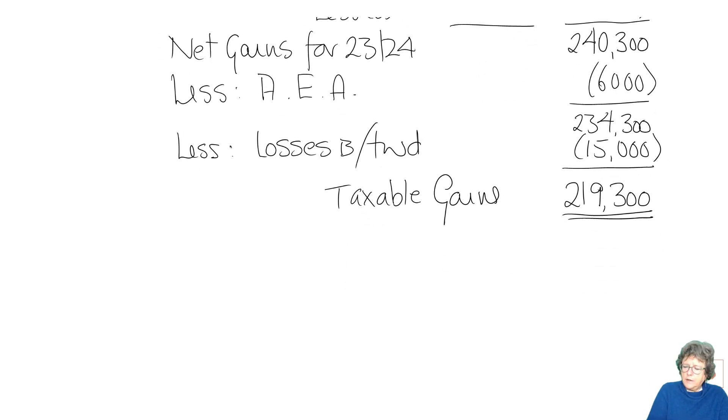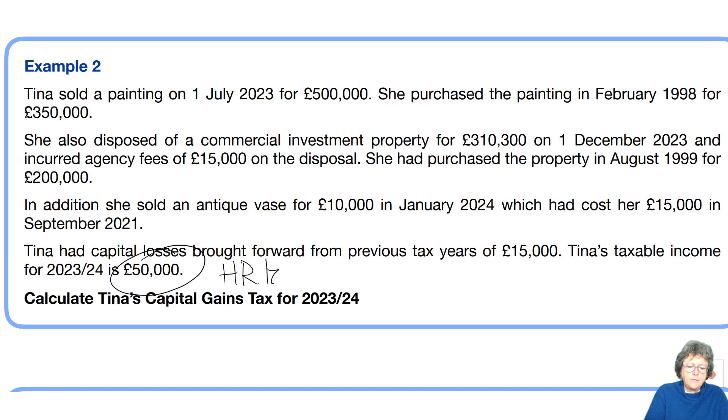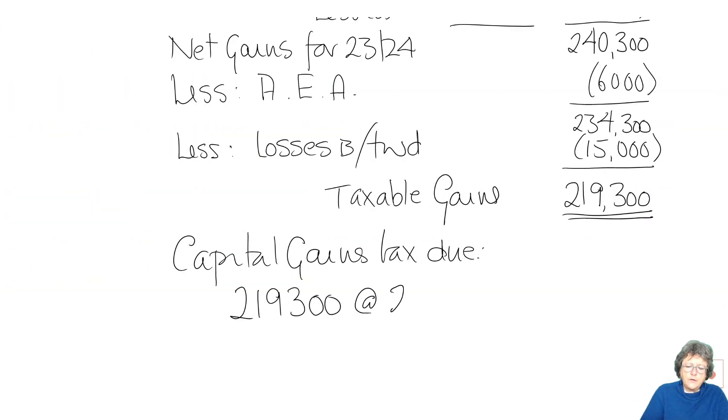Now the question asked us to work out the capital gains tax. It's going to become due. So we have £219,300. I'm just going to go back to the question and it tells us there that her income is £50,000 which means she's a high rate taxpayer and as such that means she will be taxed on this at 20% which is the high rate that is applicable at the moment. That is the tax due and the due date, always put the due date in if you can remember what it is, and that's due 31st of January 2025 which is the 31st of January after the end of the tax year.